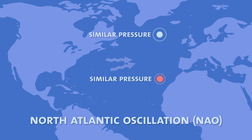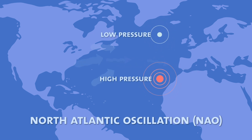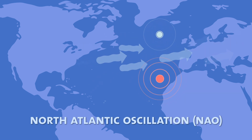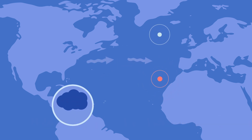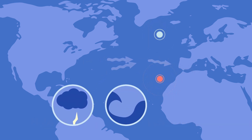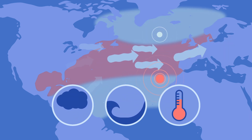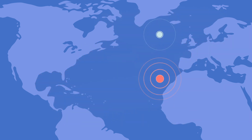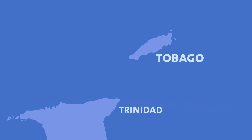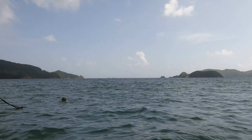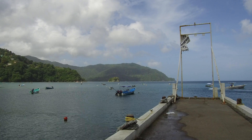When those pressure differences are similar, the winds slow down and slacken. When those pressure differences are larger, the winds speed up. As you change these winds and their directions, you change the storm tracks, you change the wave height. It also changes surface temperature both on land and in the water. In the modern record, the NAO has the strongest impact here in Tobago, and so we're trying to get coral cores to understand how the system is changing both through time and geographically.